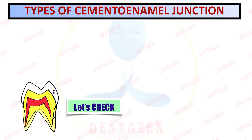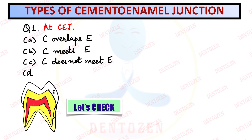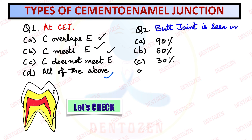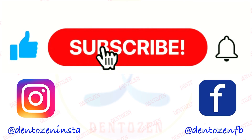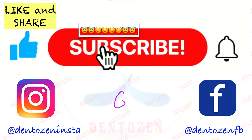Let's check what you've learned with a few MCQs. First: at the cementoenamel junction, what is happening - cementum overlaps enamel, cementum meets enamel, cementum does not meet enamel, or all of the above? Second: butt joint is seen in what percentage of teeth - 90%, 60%, 30%, or 10%? Third: which type is rarely seen - enamel meeting cementum, cementum overlapping enamel, they are not meeting, or enamel overlapping cementum? Post your answers in the comments. Keep watching, keep learning, and keep smiling. Good luck for your exams!